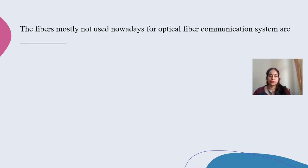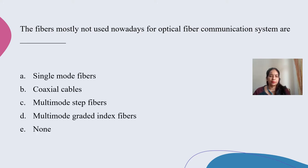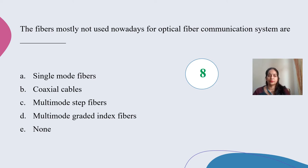Next question: The fiber type mostly NOT used nowadays for optical fiber communication systems — options are single mode fiber, coaxial cable, multi-mode step index fiber, multi-mode graded index fiber, and none. The correct answer is single mode fiber. Single mode fibers are used to produce polarization-maintaining fibers which makes them expensive. The alternative, multi-mode fibers, are complex but accurate. So single mode fibers are not generally utilized in optical fiber communication systems today.